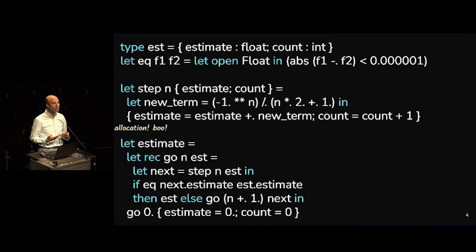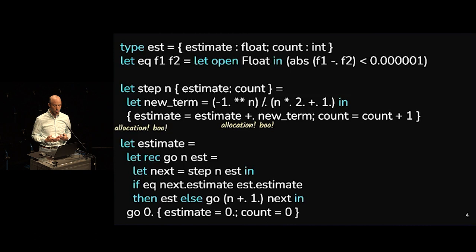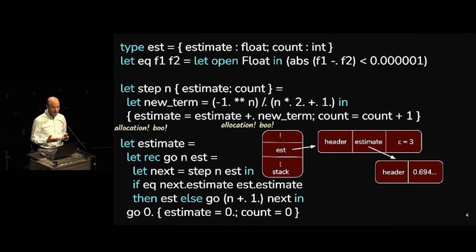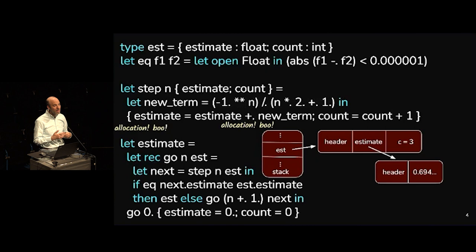One place we do allocation is when we create the new record, which has to allocate memory. Even when we just do floating point addition we have to allocate some memory, and as we're computing the new term we have a lot more allocation — lots of little boxes in memory. Specifically, we can look at the memory: we have an estimate variable inside of go pointing to a record block in memory, which has a header field, an estimate field, and a count field.